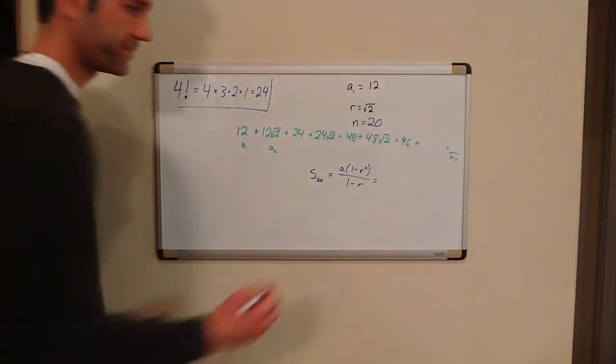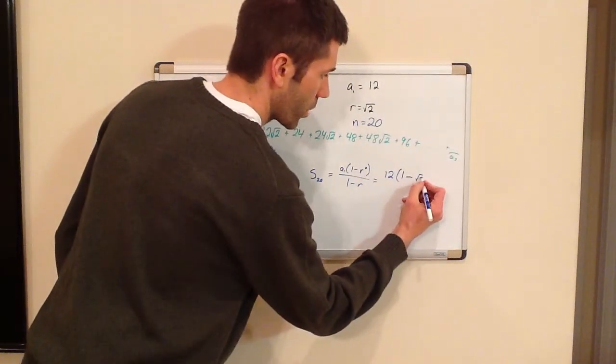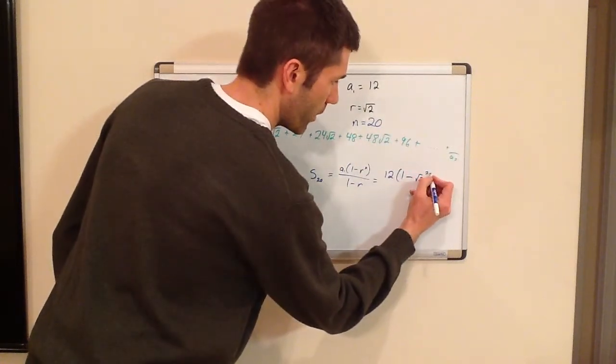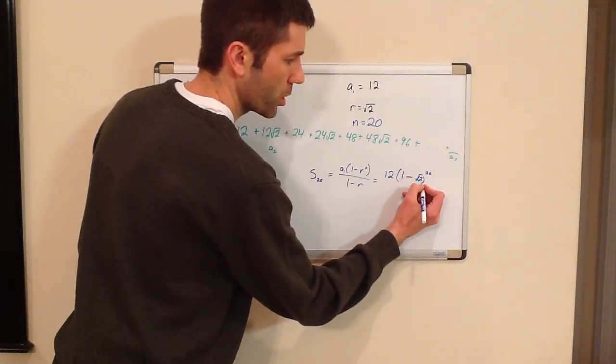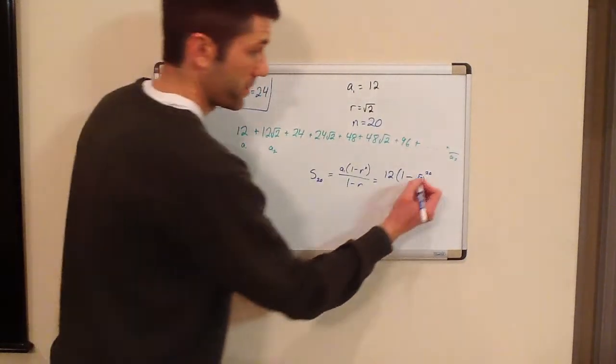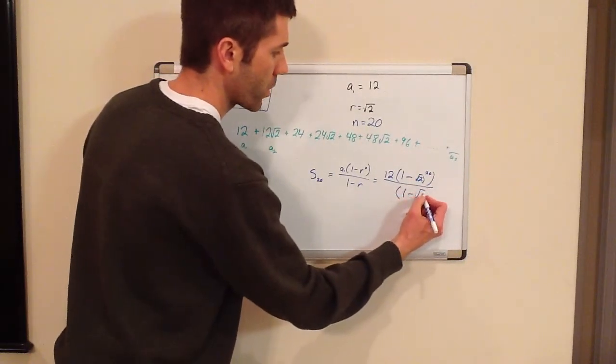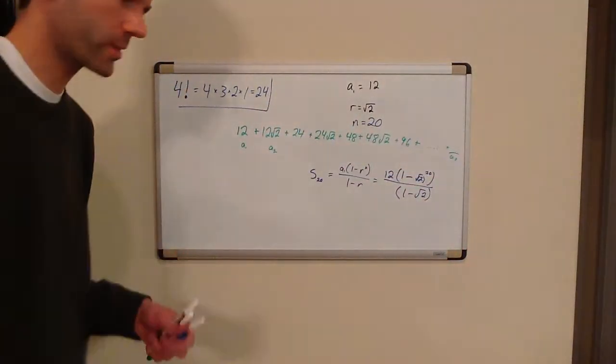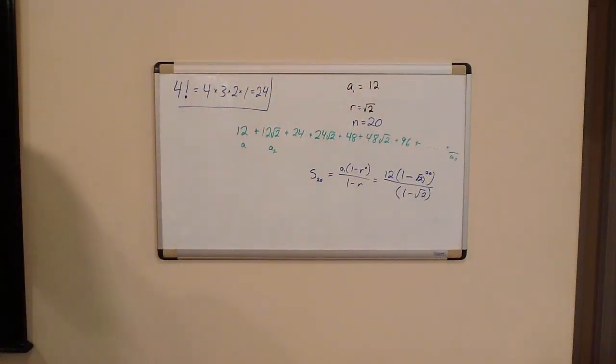A sub 1 is 12, times 1 minus the square root of 2 to the 20th power. Now, calculators get crazy here. There's an automatic parenthesis that pops up here. Close it before you get your exponent. Divide it by, parentheses are important, 1 minus the square root of 2. There we go. And we could make our list all the way to 20 and then add them, but while we waste our time, that would be boring. Let's not do that.